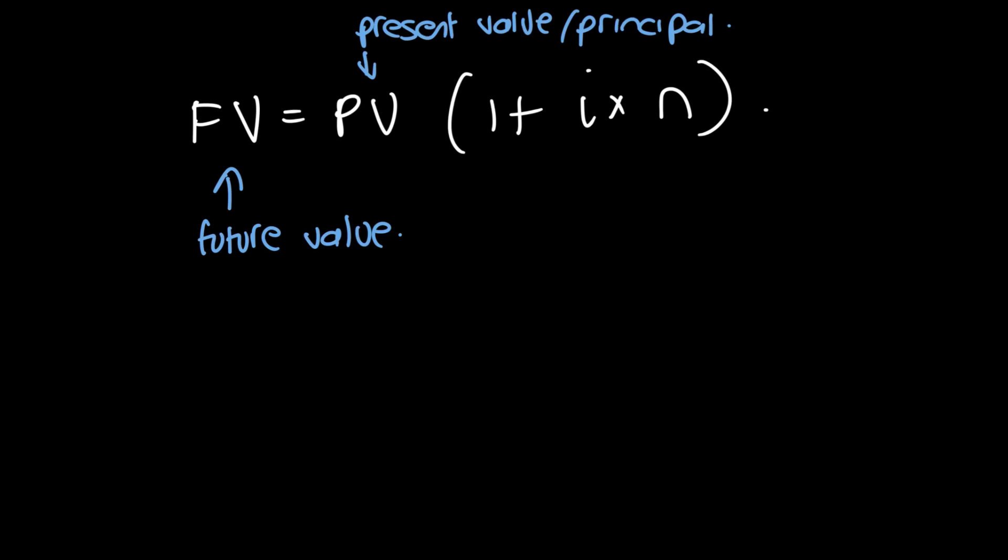So, future value is equal to present value times 1 plus i times by n. And let's again remind ourselves what everything means. This is the future value. This is the present value or the principal. This is the interest, more specifically the simple interest. And this is the number of periods the loan is held.